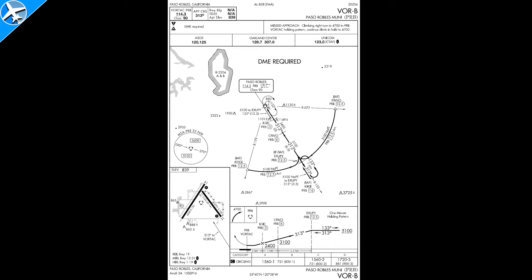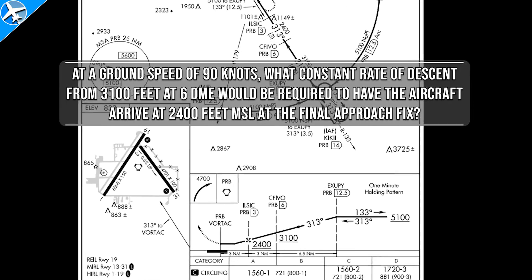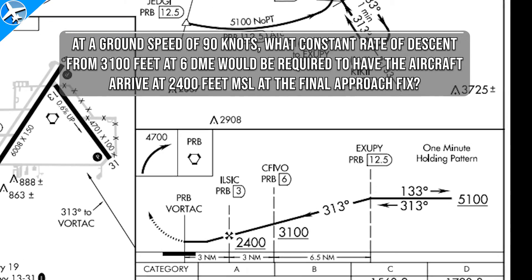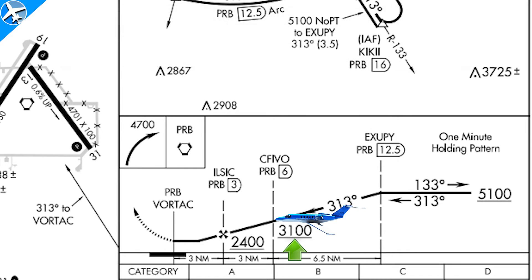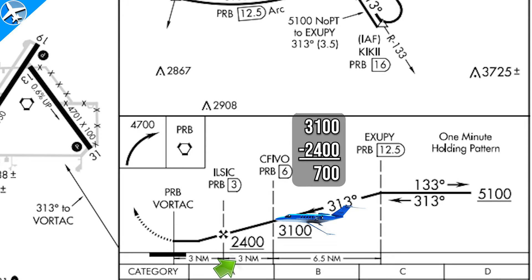Here is the particular approach plate associated with this question. The altitudes and distances in the question are shown on the chart, so let's just focus on the chart. The airplane is at 3,100 feet at 6 DME. The final approach fix is the Maltese cross here, and we have 3 miles to lose 700 feet going 90 knots over the ground.